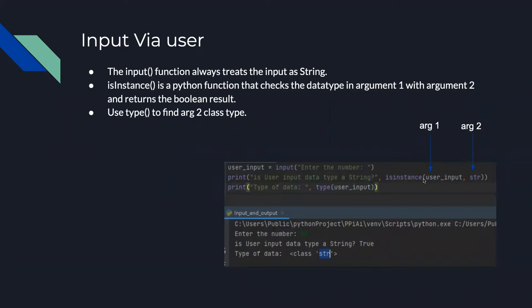A use case for isinstance: say you need to make sure a piece of data is an int before doing mathematical operations on it. You can use isinstance(my_data, int) — it returns true if it is an int, false if it's not. That allows you in an if statement to cast the data to int if it's not already one, then proceed with your other code.